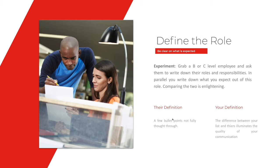Here's a good experiment: grab a B or C player from your team and ask them to come up with a document that defines their roles and responsibilities. In parallel, you do the same for that role. You'll probably come up with a page and a half of bullet points. A B or C player will probably come back with three or four bullet points — you're lucky if they're complete sentences. That tells you the disconnect on what they think their job role is versus what you think it is. If you grab an A player, they'll probably have a definition longer than yours because they want to grow.